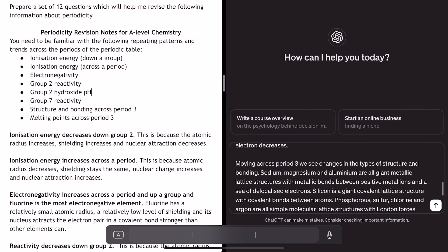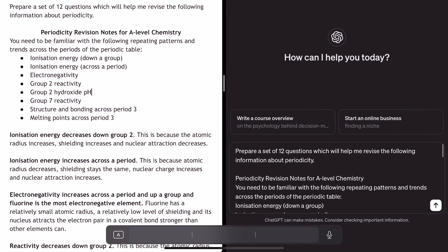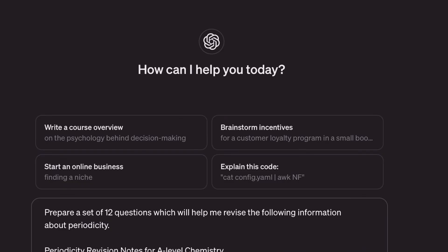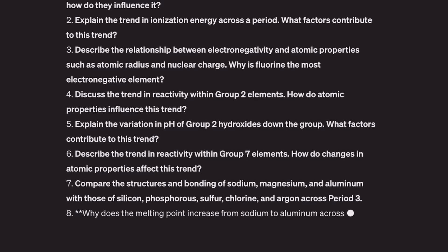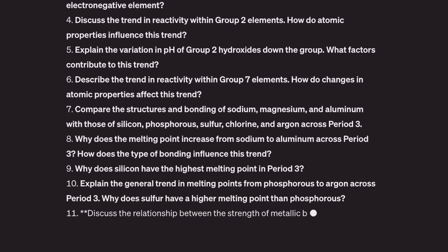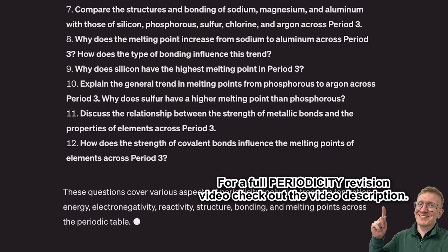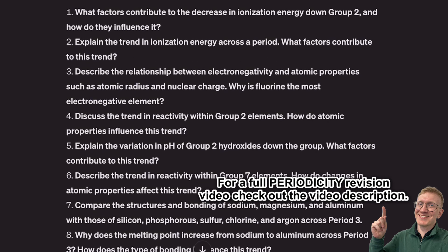I've put all of that information in and now I'm curious to see what it gives me back. Let's make it full screen and see what it's got. Okay, here are 12 questions to help you revise the information provided on periodicity. It's doing this really quickly — let's have a look at what we can see here.